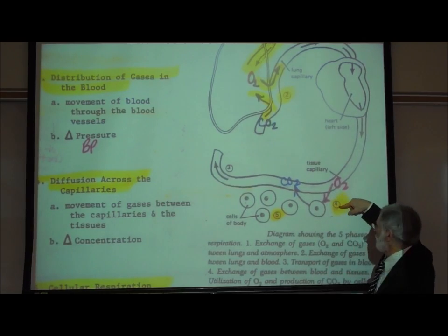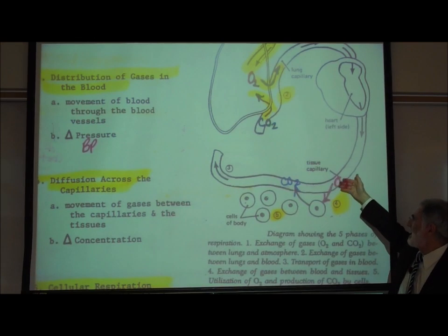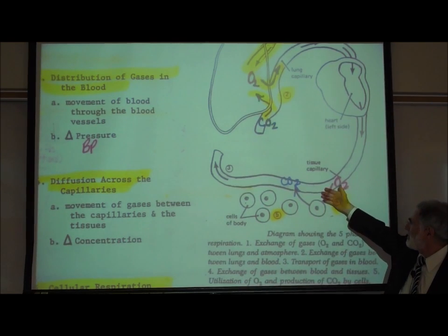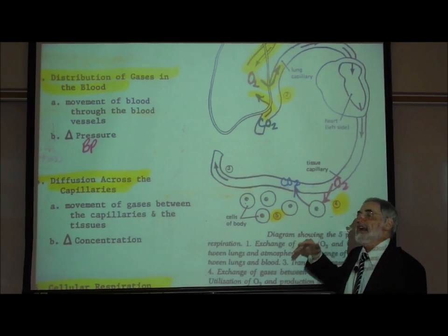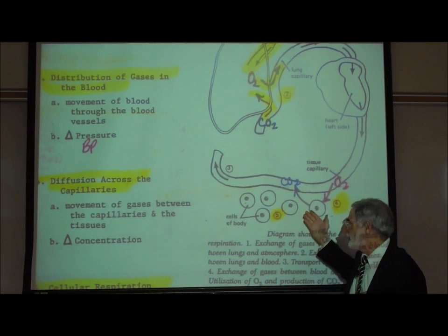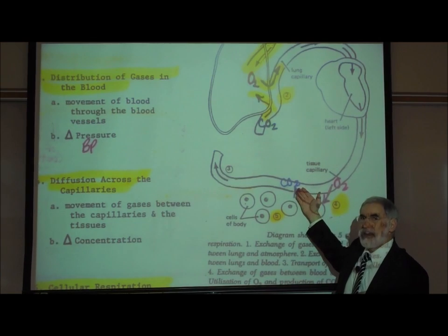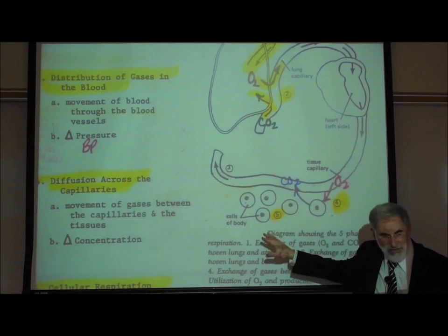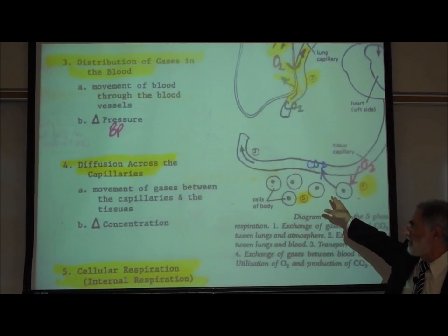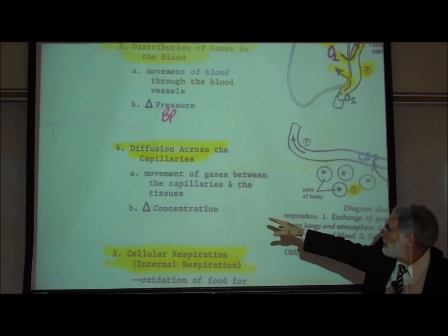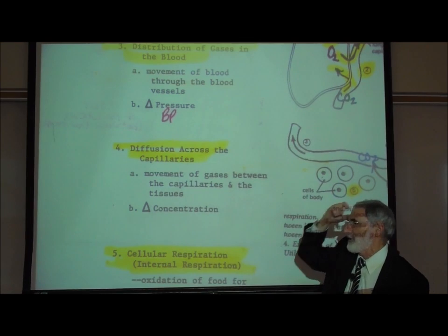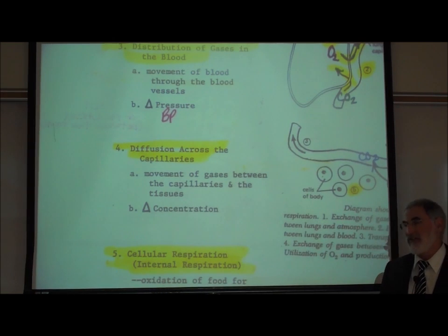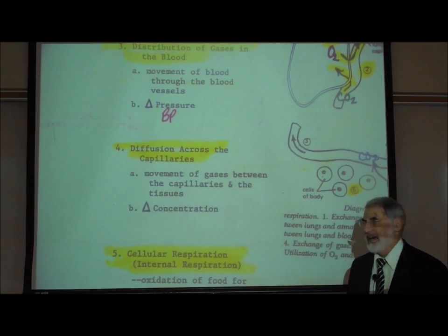Number four indicates that oxygen will diffuse out of the capillaries of the bloodstream, first to the tissue fluid and then into the cells. Simultaneously, carbon dioxide diffuses out of the cells into the tissue fluid and from the tissue fluid into the capillaries of the bloodstream. This exchange of gases between the bloodstream and the tissue cells again involves differences in concentration of oxygen and carbon dioxide.